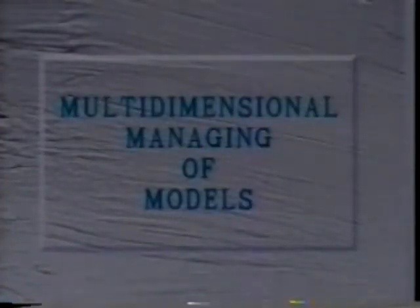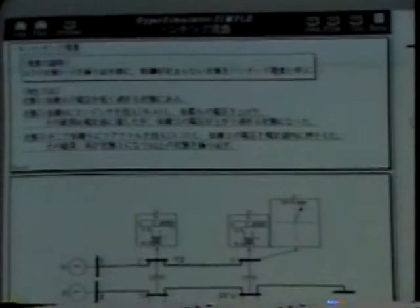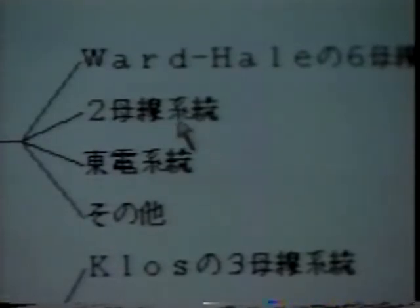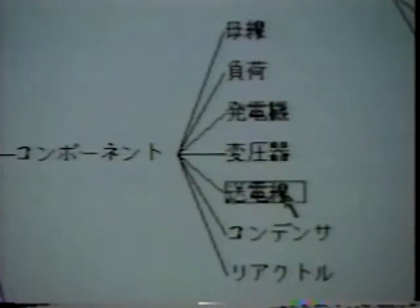For managing the model, the multidimensional data managing method used in hypertext is employed. There are two methods of management: managing the whole database by database menu window, and managing the related data by linking the model to the text and icons in the simulation window. The database is shown in tree form and managed visually. Calling up models can be done directly either by selecting items in the tree or by selecting linked items in the text by mouse. We can call given models onto the simulation window, such as a two-bus power system or a power transmission line model.